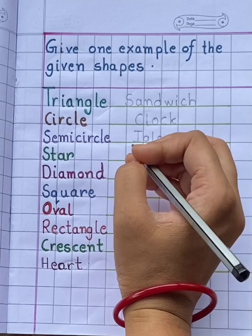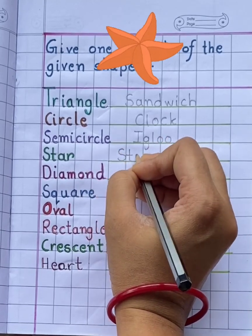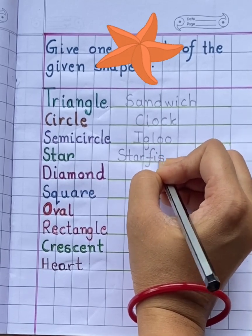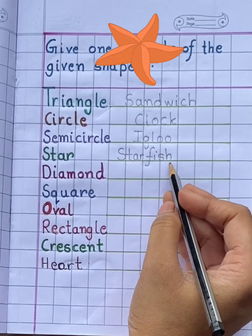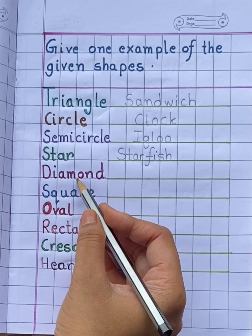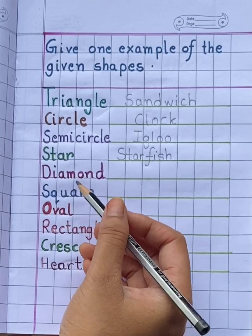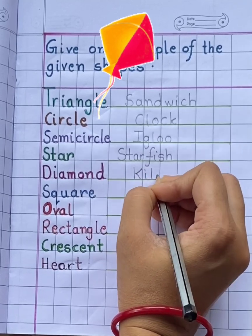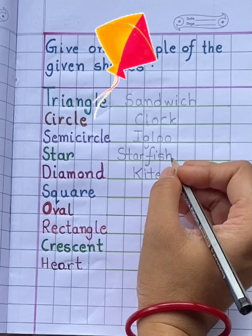Star example: starfish. S-T-A-R-F-I-S-H. Diamond. Example of diamond is kite. K-I-T-E.